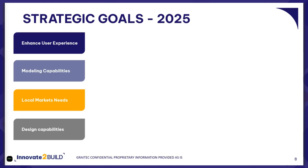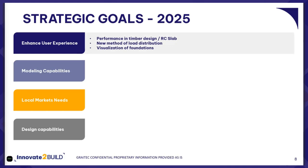For each of these four categories, I selected three examples of planned novelties and improvements. For user experience improvements, we will increase the performance in timber design also under the CCLab module. We provide a new method of load distribution and also the possibility to visualize it — to see the foundation on the 3D model.